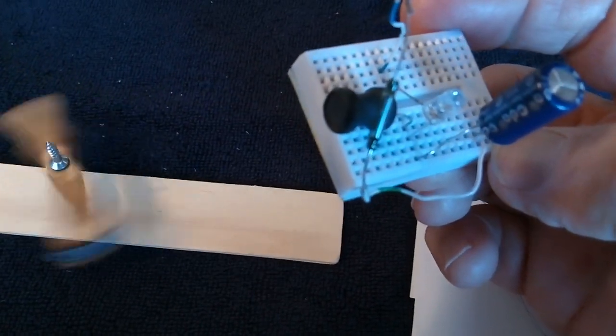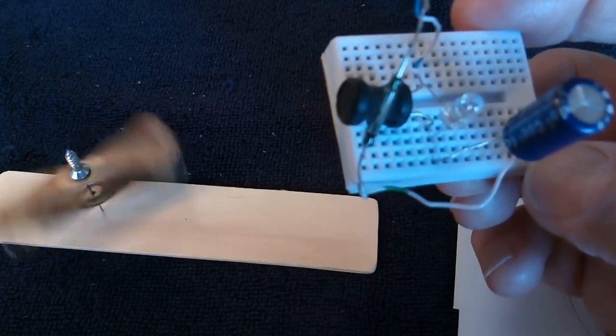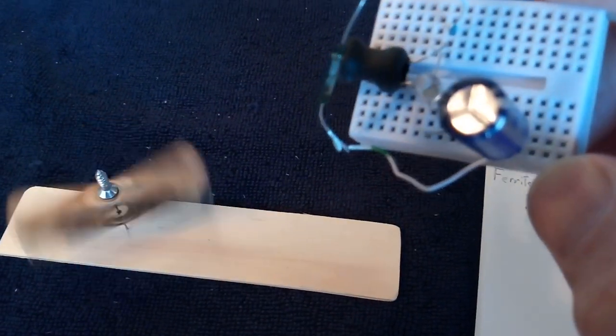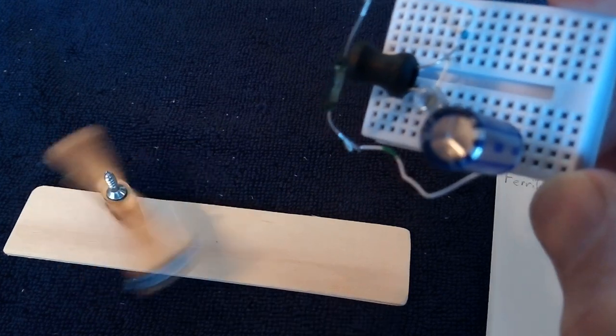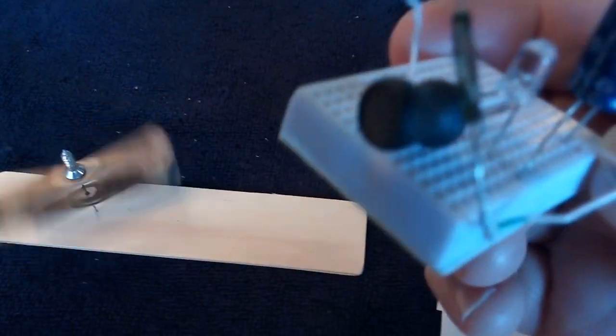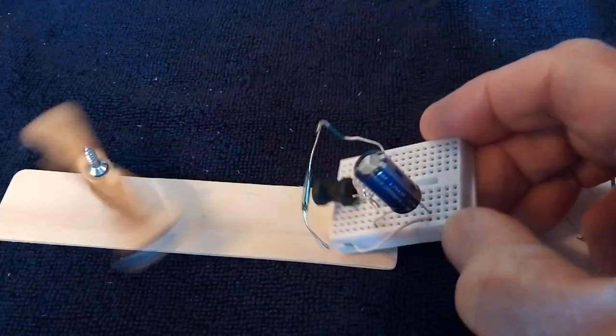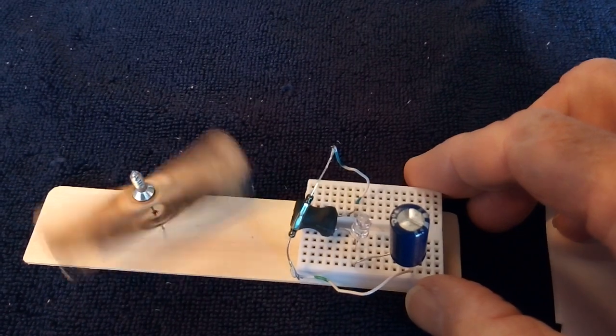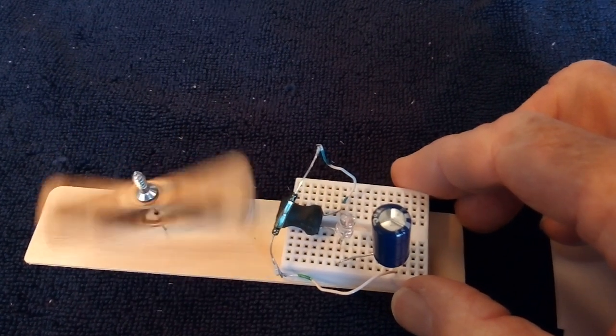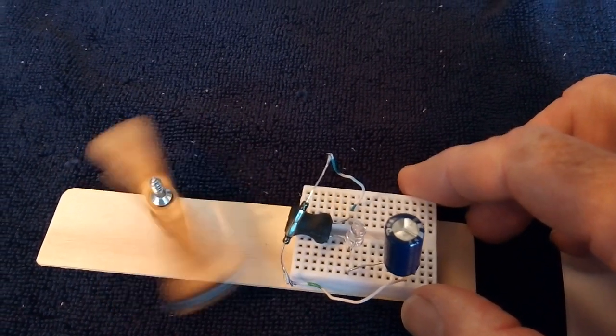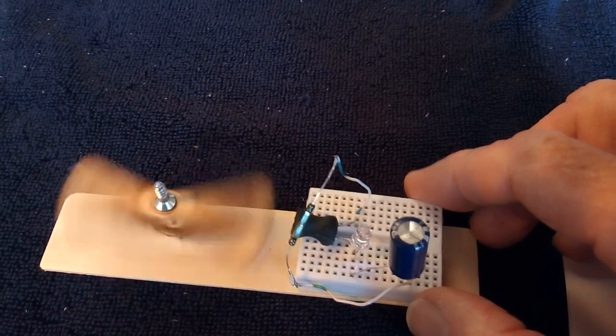They call them chokes and they use them in AC circuits to filter out things, but this particular thing works really good in this type of pulse motor.